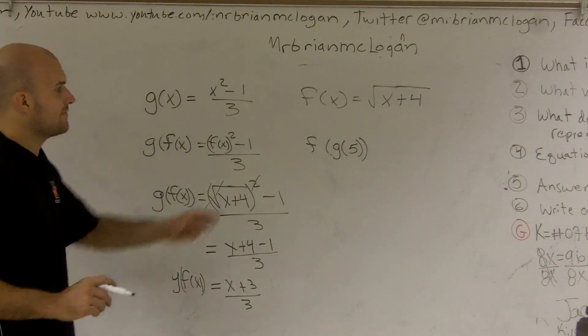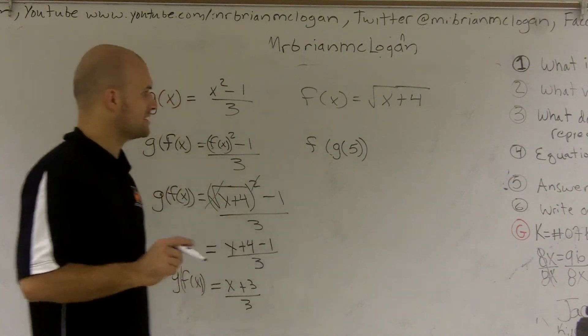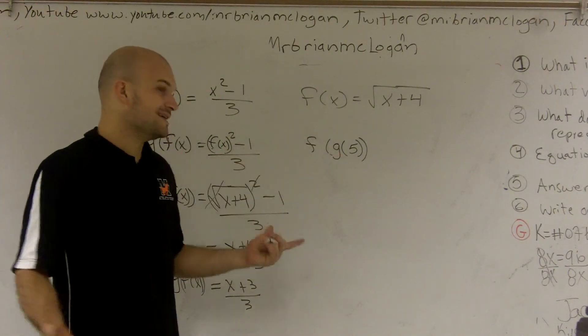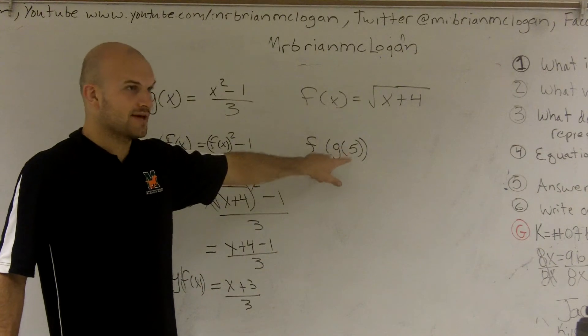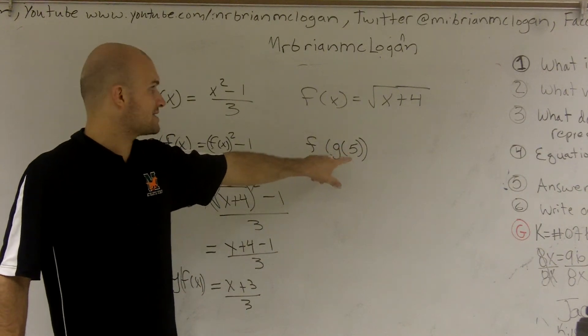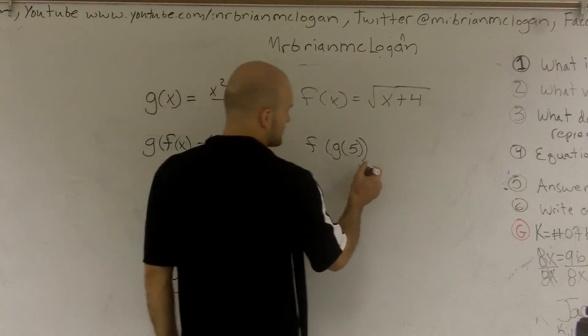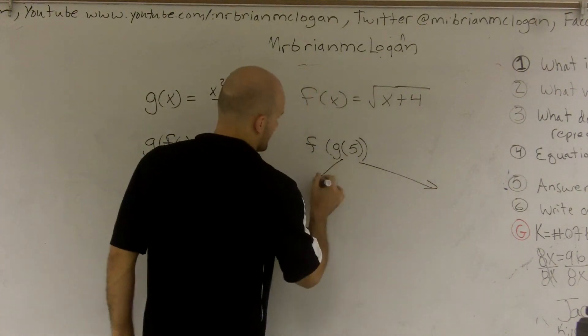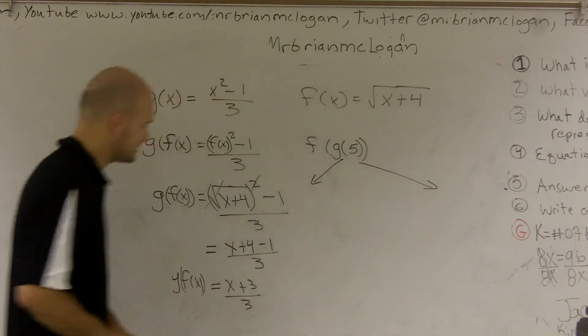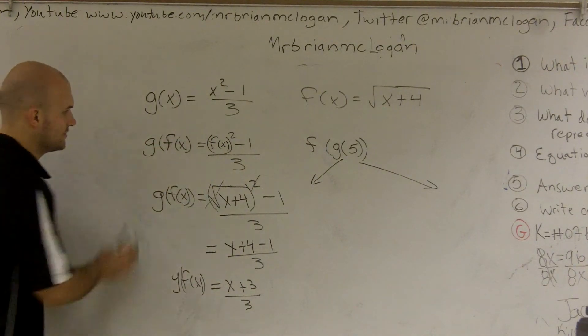All right, now to find g of 5, there's two different ways you can do this. The first way, which I think is the easiest way, is what does g of 5 mean? That means you're going to plug 5 into the g function, right? So I'm going to do this two different ways. And hopefully I'll let everybody write that down.